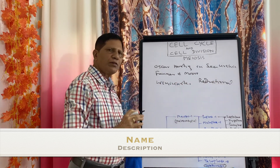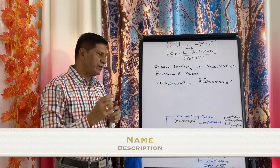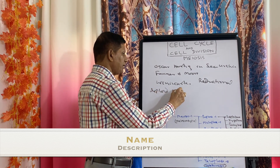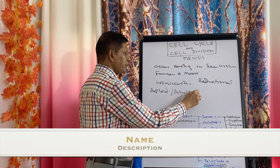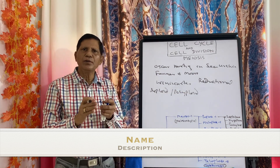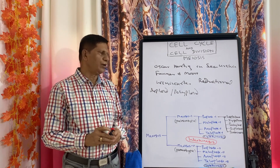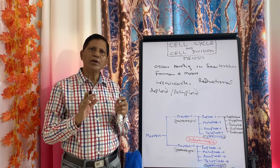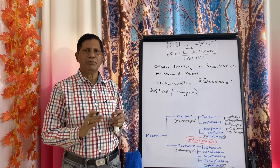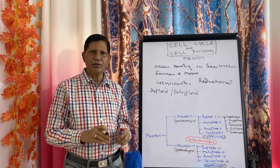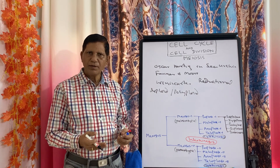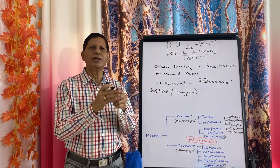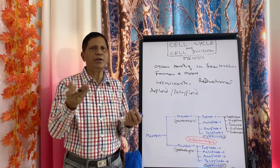Now since there is reduction in chromosome number, meiosis always takes place in diploid or polyploid cells. It will never take place in haploid cells because the chromosome cannot be reduced to half N by 2. And meiosis always takes place in sexually reproducing organisms because when male and female gametes are produced, they have to be reduced to half through meiosis, and again during fertilization they combine together so that the normal number will be restored.